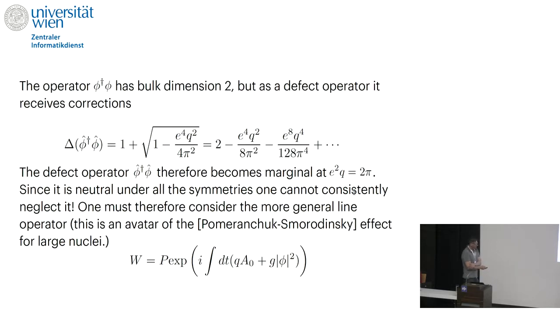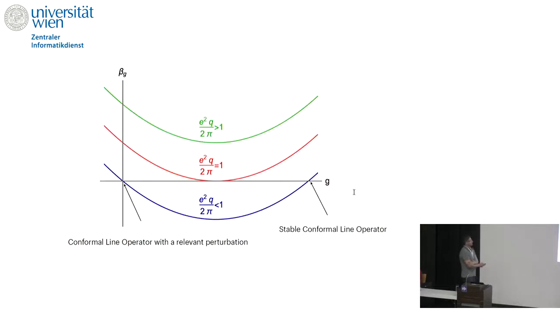So for Wilson lines of charge 68 or 69, this operator becomes marginal, and therefore you must add it to the Wilson line. So the formula that we're used to for Wilson lines is not quite correct. There is a marginal operator that has been neglected that must be added.